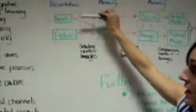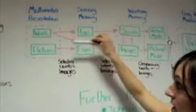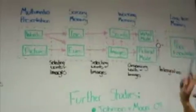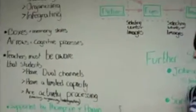Teachers must be aware that students have dual channels, such as words within the ears, pictures on the eyes, and have a limited capacity within these memory stores, and that they are actively processing, such as selecting, organizing, and integrating, whilst they are learning.